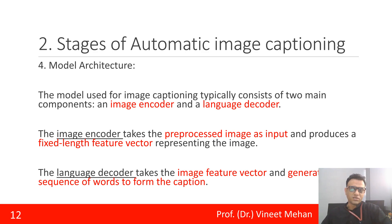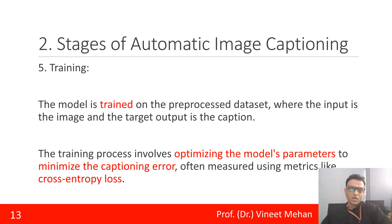The fourth stage is model architecture. There are two main parts: for images, an image encoder is used, and for generating text, a text-based decoder is used. So the model consists of an image encoder and a text decoder working together.